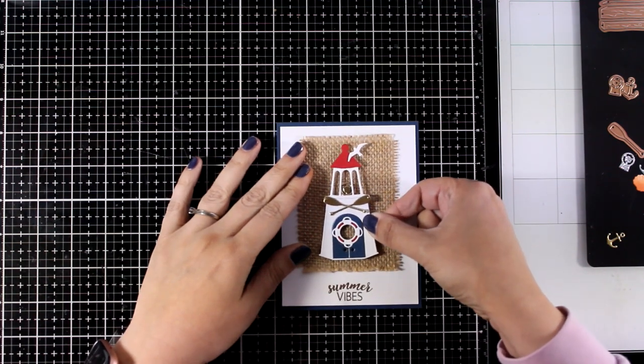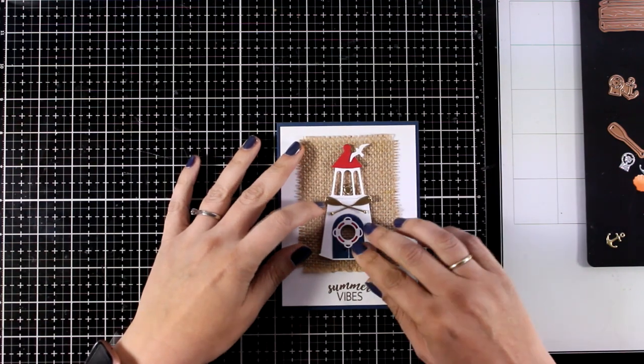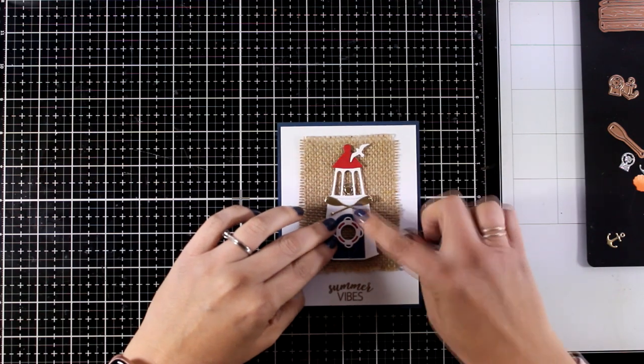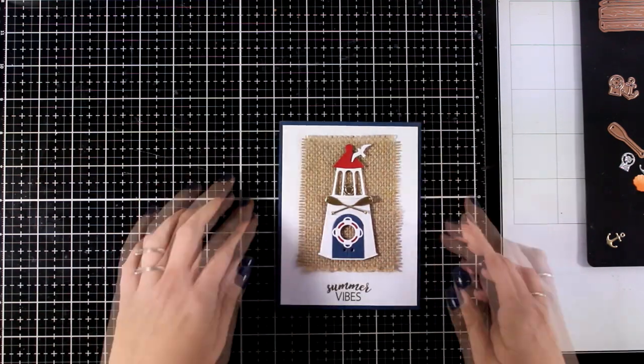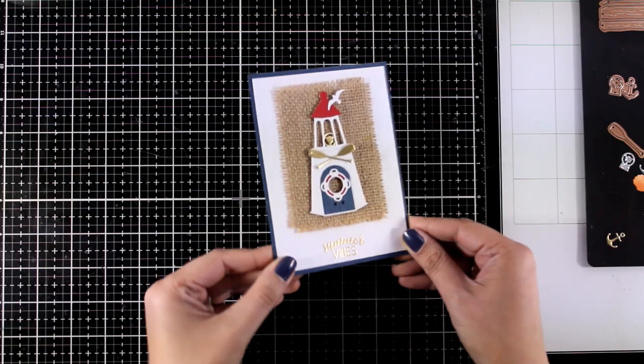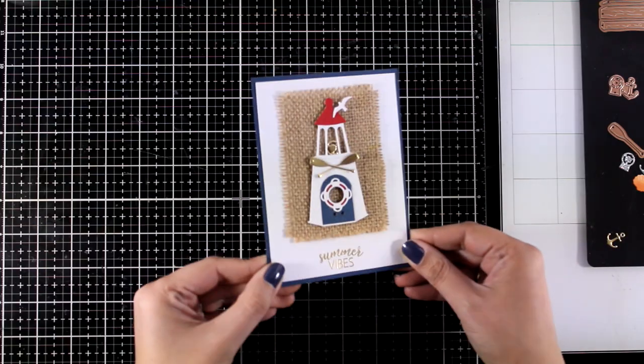I used foam squares at the back of my lighthouse. I'm going to place it down. And you can create something similar to create a home decor maybe for a summer house. I think that would look beautiful.